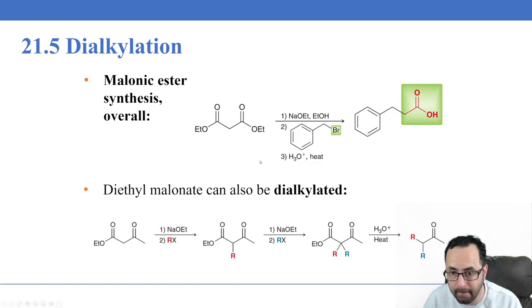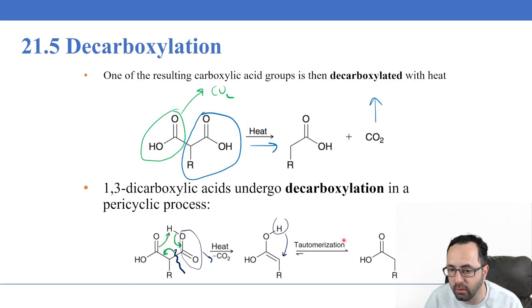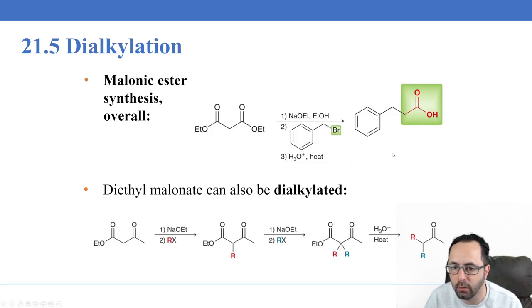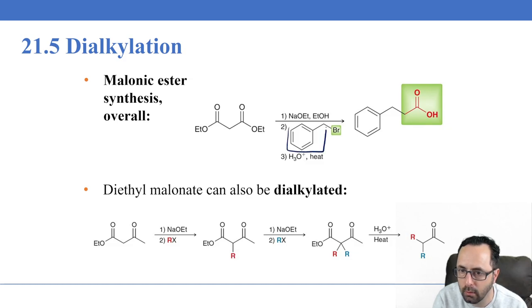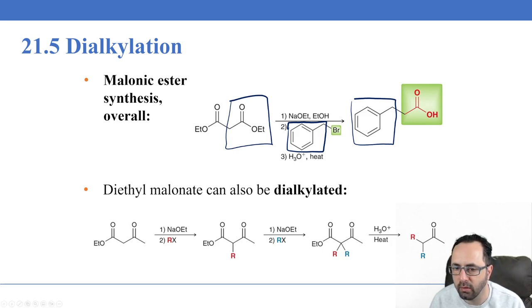Overall, in the malonic ester synthesis: we treat diethyl malonate with a base to deprotonate the alpha carbon (flanked by both carbonyl groups), then treat with a primary alkyl halide. The enolate ion attacks the alkyl halide via SN2. When we treat with H3O+ and heat, the series of hydrolysis and decarboxylation steps ultimately gives us the carboxylic acid product. The alkyl group installed from the alkyl halide becomes the substituent on the final carboxylic acid.